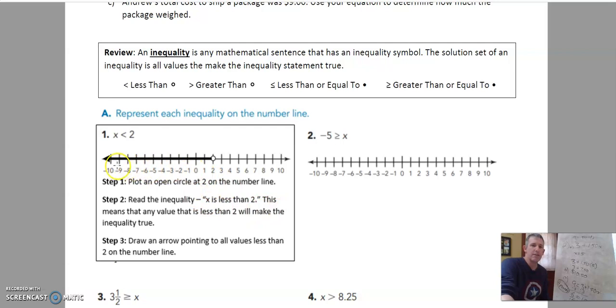This means the values need to be less than two. So this is the side of two that are less than two. So we highlight all of these. We put a line over here and we put an arrow because it can be everything less than this. Going on and on and on and on. All right so let's look at number two.